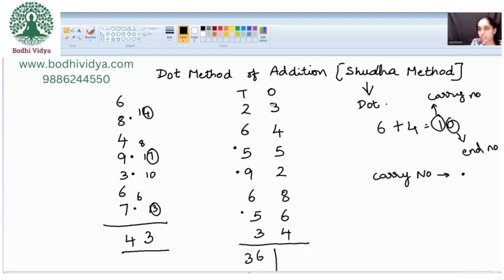Now we will look into 1s place. 3 plus 4 is 7. 7 plus 5 is 12, 2 in my mind. Carry represented here. 2 plus 2 is 4. 4 plus 8 is 12. So 2 in my mind. 2 plus 6 is 8. 8 plus 4 is again 12. 2 here.